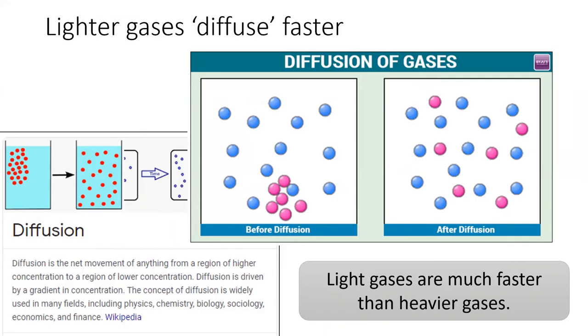Particle mass affects the rate of diffusion of particles within a container. Diffusion is the movement of particles from high concentration to low concentration. Lighter gases, because they move faster, diffuse faster than heavier gases.